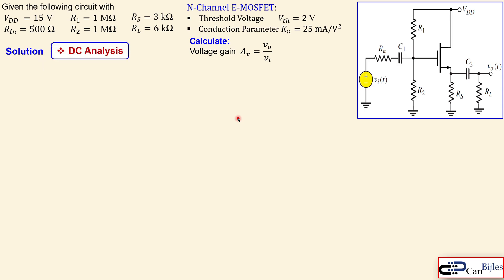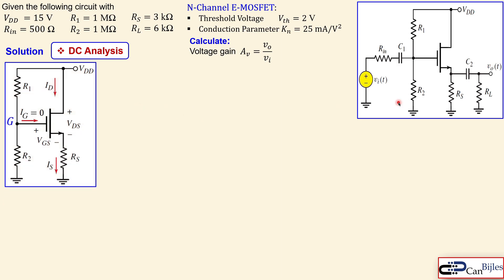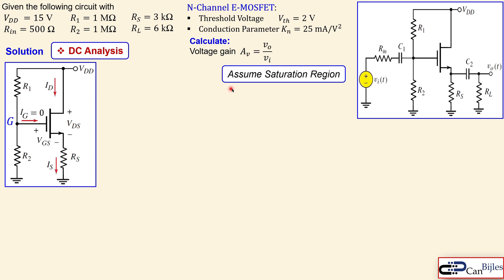Let's look at our solutions. We start with the DC analysis, then the AC analysis, and then verify in the SPICE simulations. We first transform this circuit into a DC analysis circuit, meaning the capacitors are perfectly open. So we lose RIN, VI, and also the load RL. We assume this MOSFET is operating in the saturation region, which is also called the linear region in MOSFET terminology.